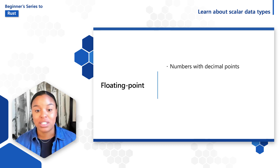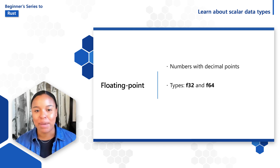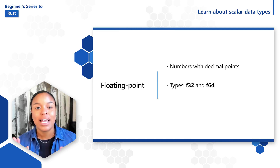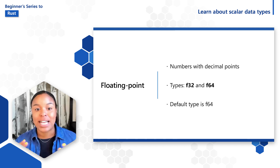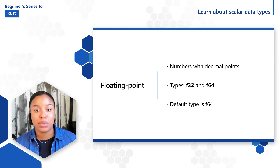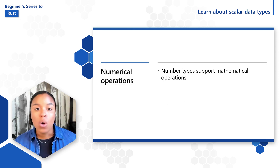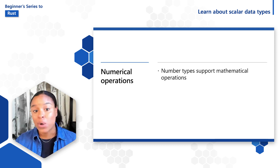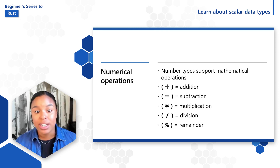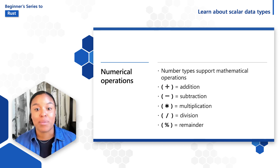Floating point numbers are simply numbers with decimal points. Rust's floating point types are f32 and f64, which are 32 bits and 64 bits in size respectively. The default type is f64 because on modern CPUs it's roughly the same speed as f32 but capable of doubled precision. All Rust number types support mathematical operations such as addition, subtraction, multiplication, division, and remainder.